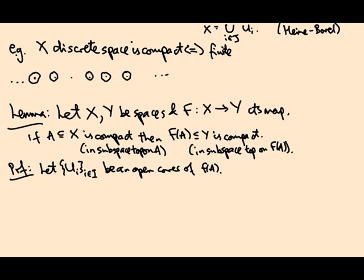By definition of the subspace topology, there exist V_i open sets in Y such that U_i equals V_i intersect f(A). And now if we take the preimages f^{-1}(V_i), these are open inside X.